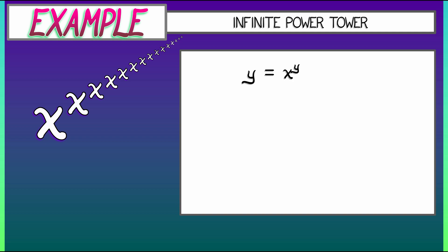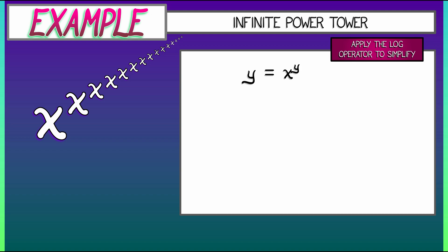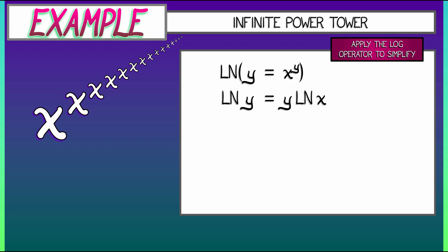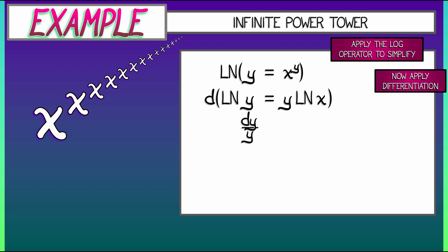That implicit equation is the key to how we're going to differentiate this function. We're going to apply the log operator to simplify that exponent. Taking the log of both sides: on the left we get log of y; on the right we get y times log of x. Now we differentiate implicitly — on the left we get dy over y, and on the right, by the product rule, we get dy times log of x plus y times dx over x.